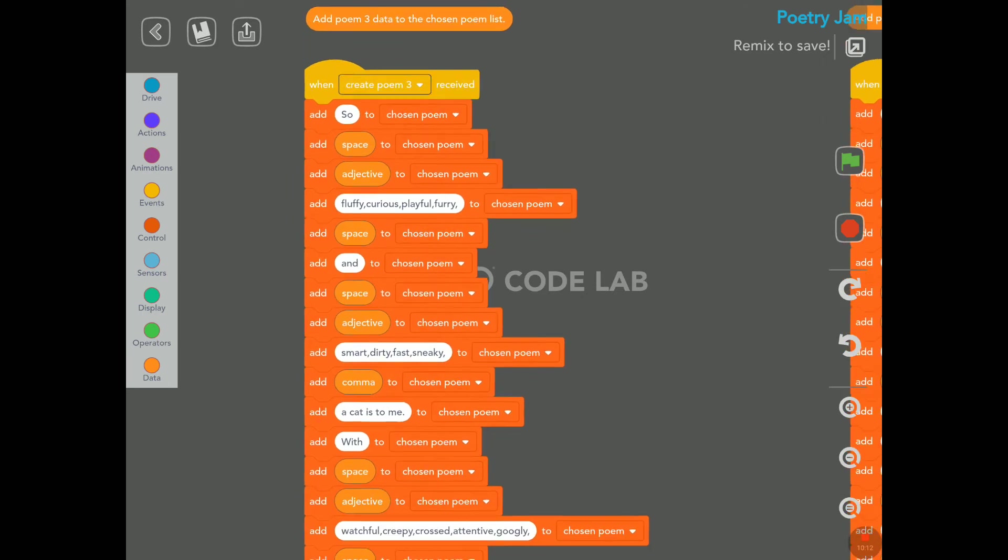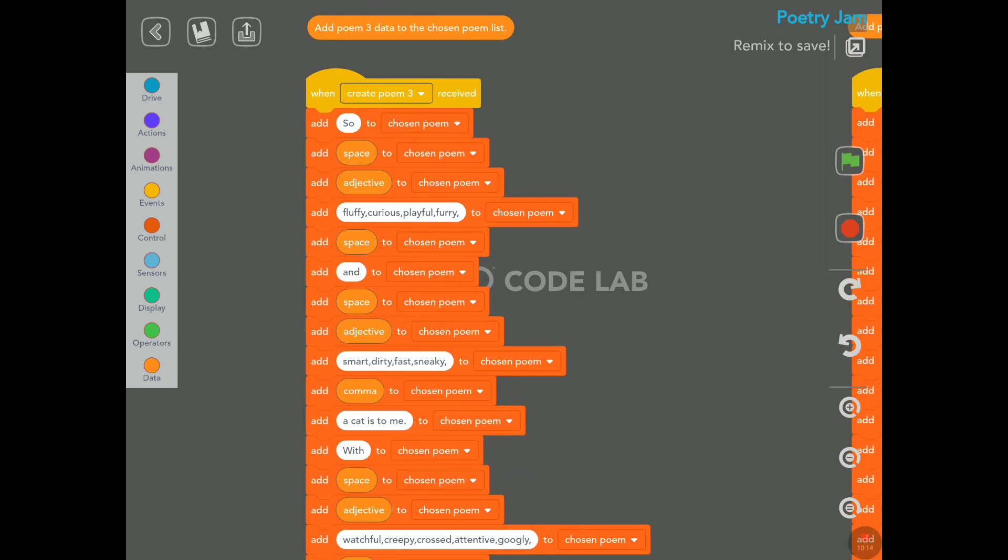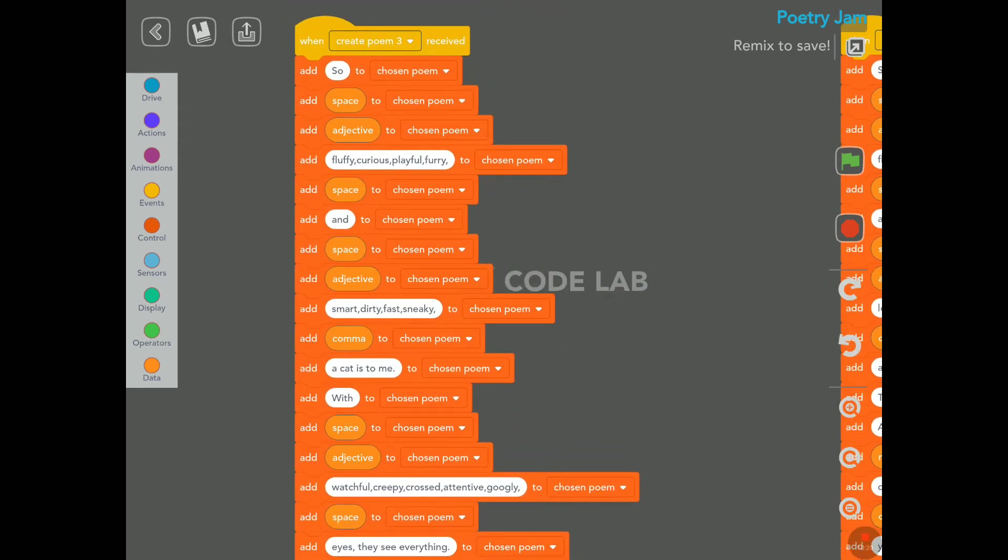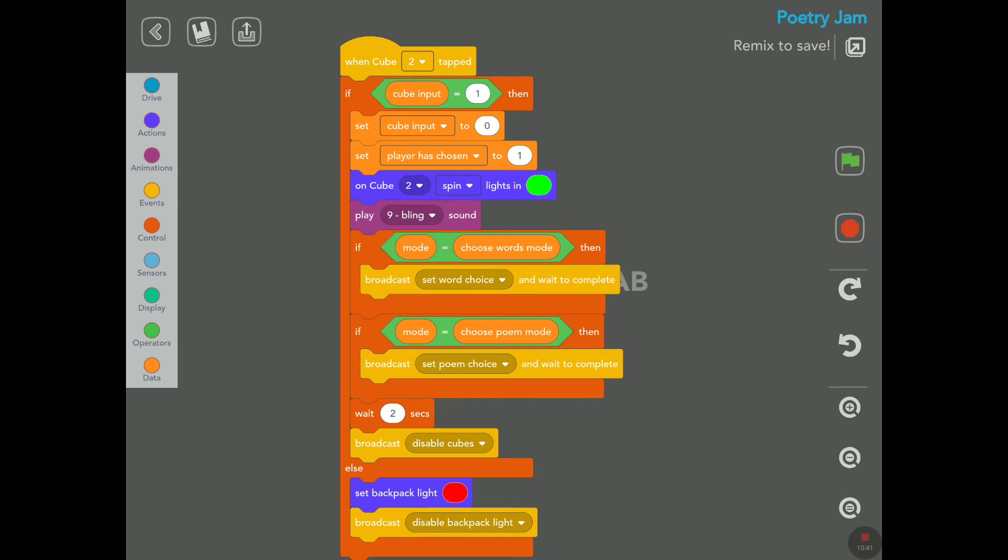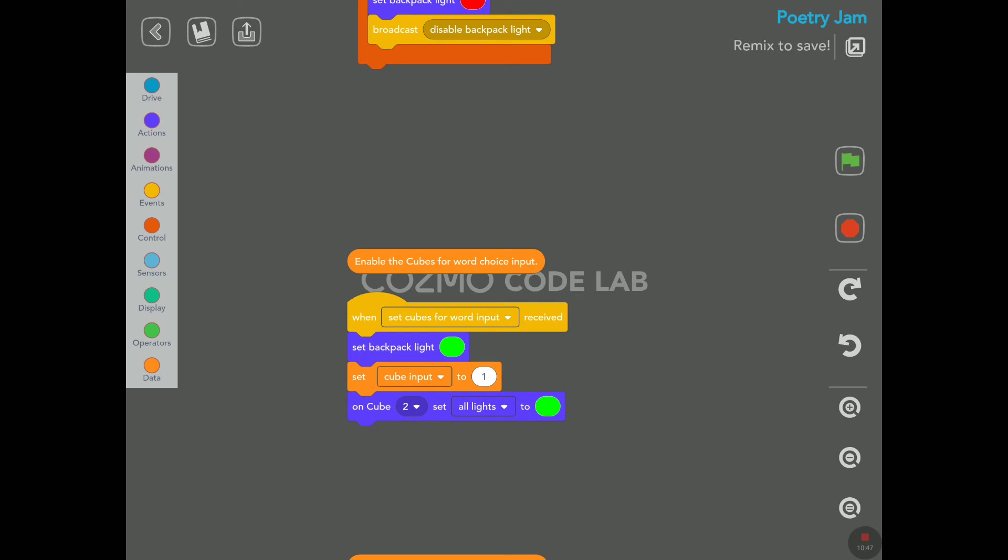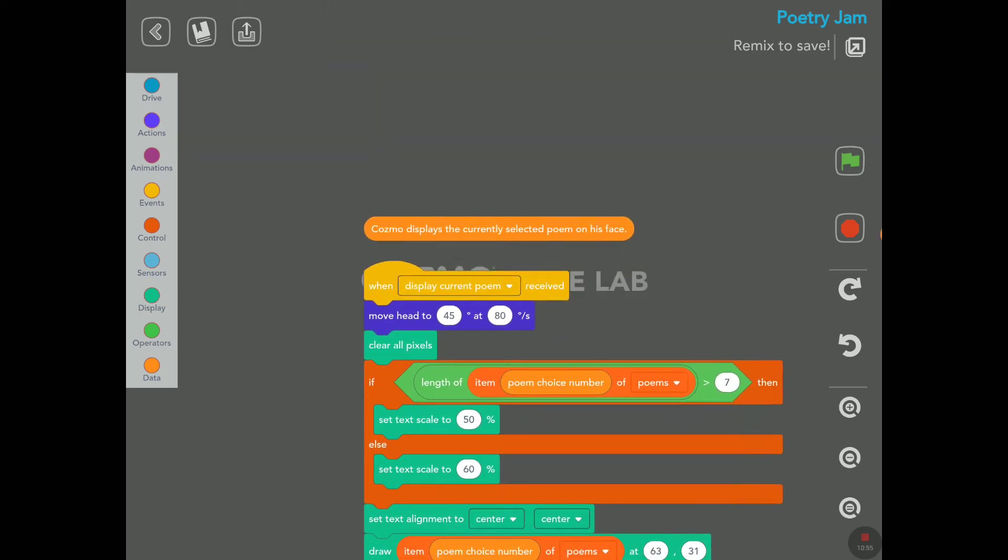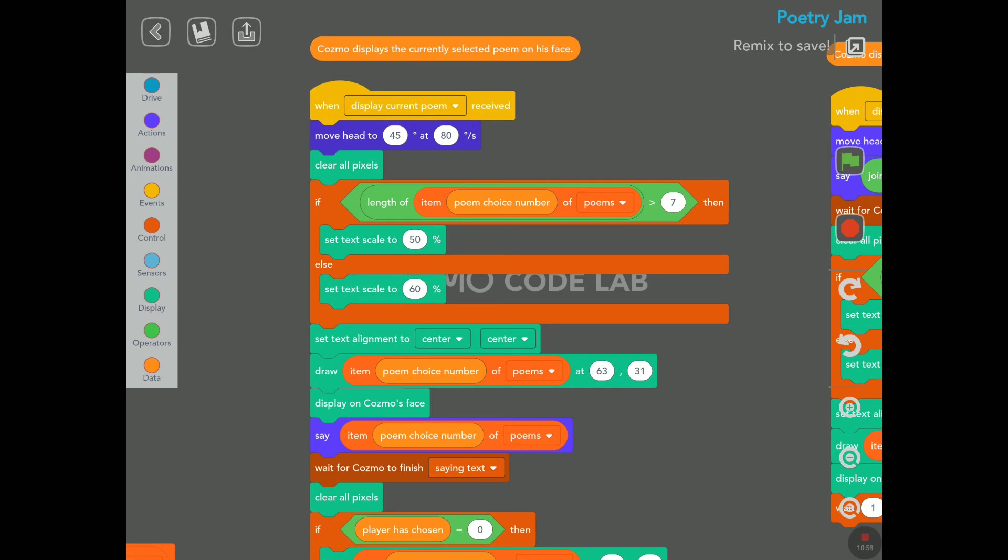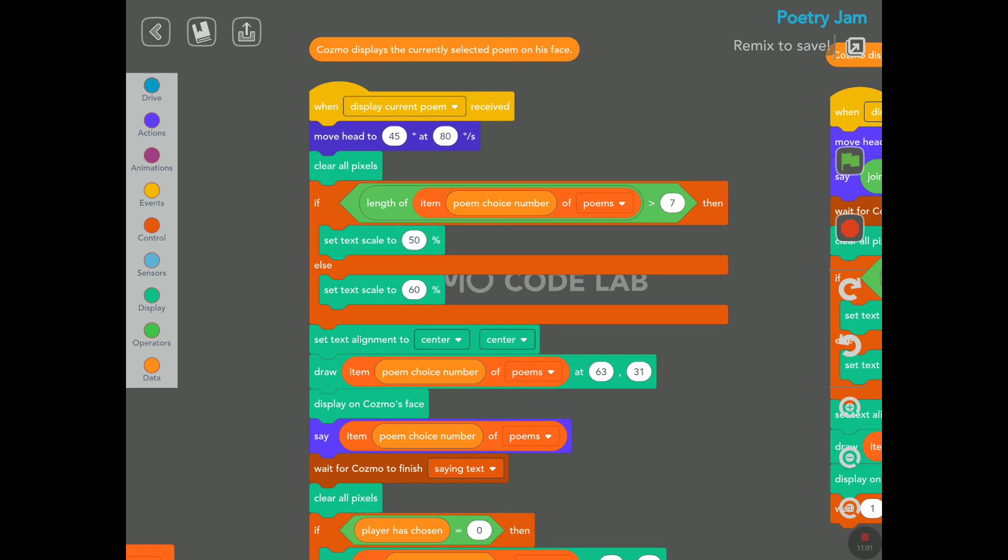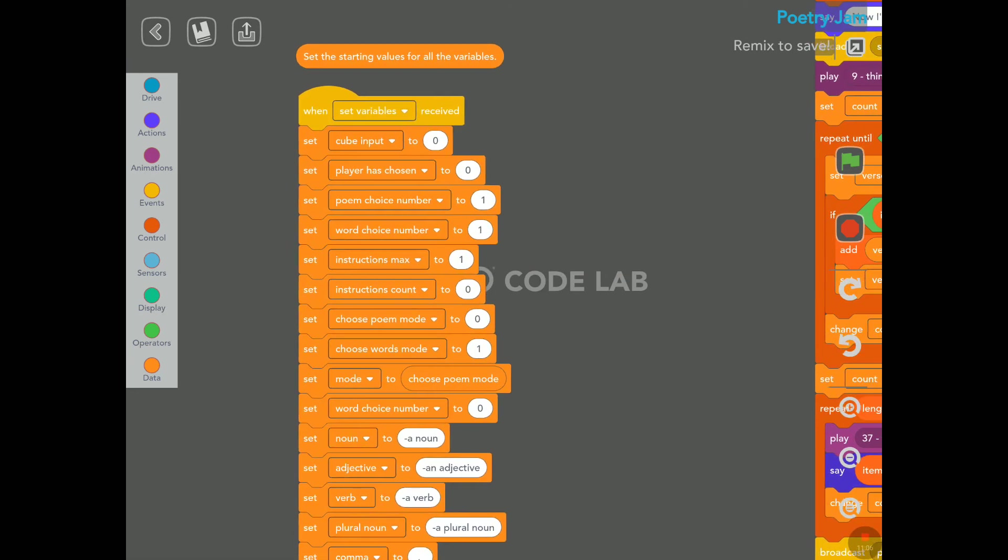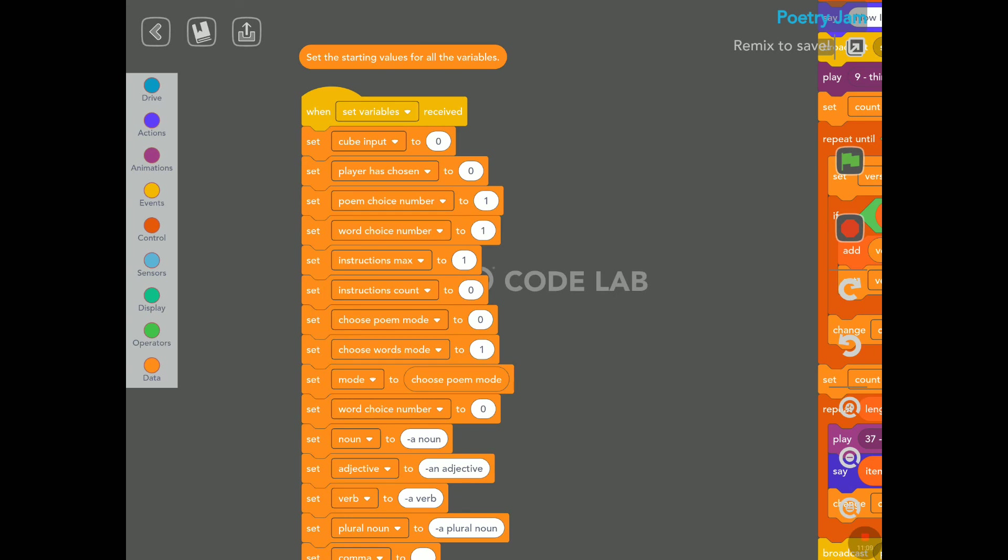Randomly choose a word from the word choices. And again here, same idea: Add poem three data to the chosen poem list. So we have one, two, and now we have three here. And here for cube number two, when cube two is tapped, do this loop. Enable the cubes for word choice input. Enable the cubes for poem choice input.